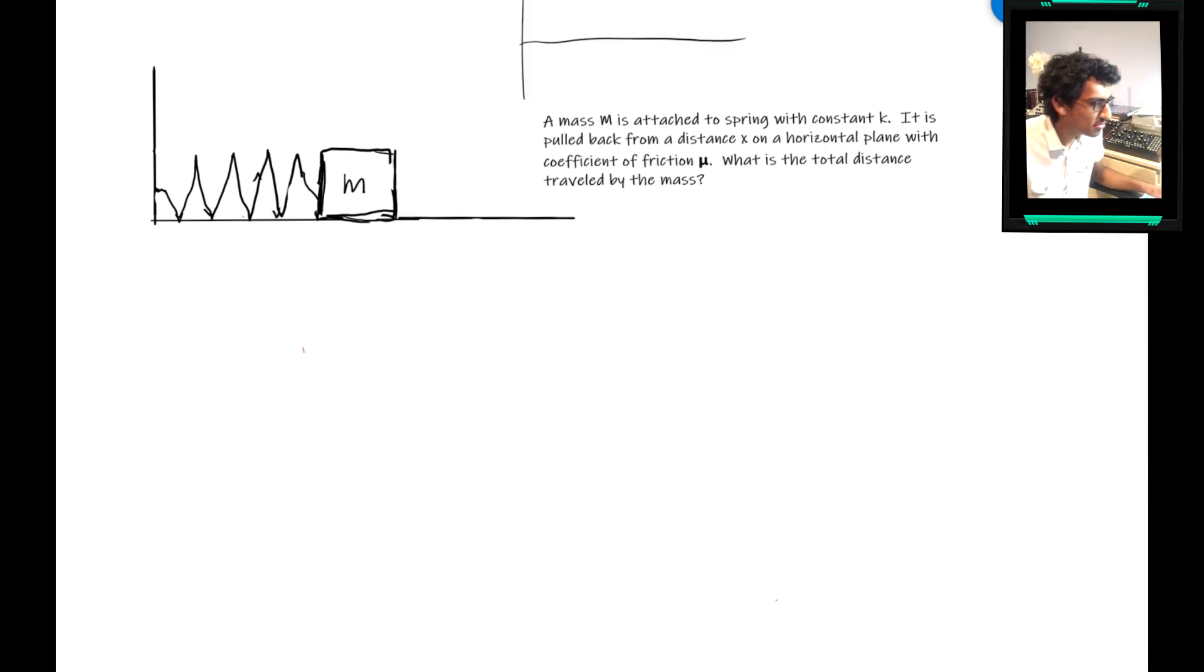A distance time graph for a spring looks something like a sine graph, but because we have this dampening factor from the friction, it would tend towards the equilibrium point.